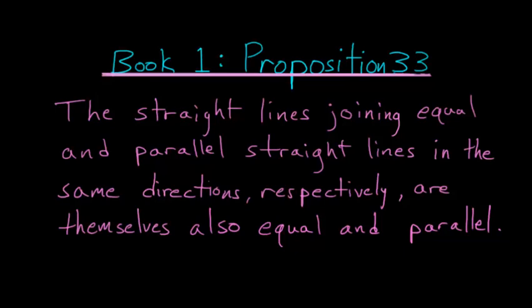For Book 1, Proposition number 33 of Euclid's Elements, the straight lines joining equal and parallel straight lines in the same directions, respectively, are themselves also equal and parallel.